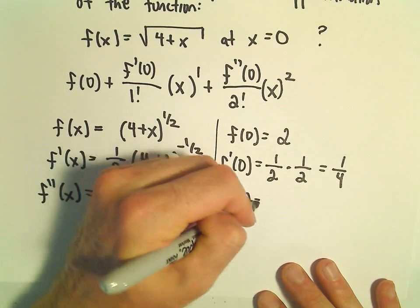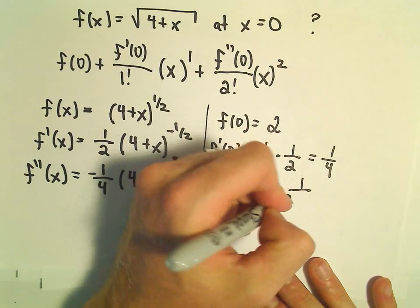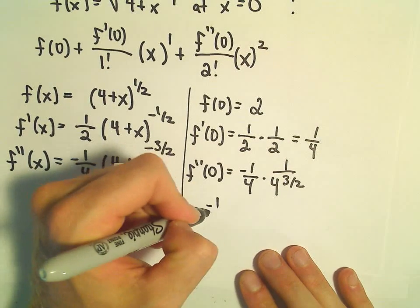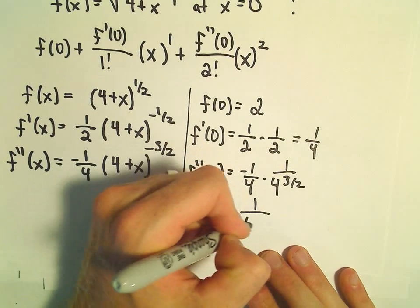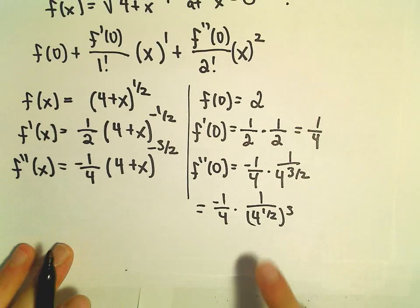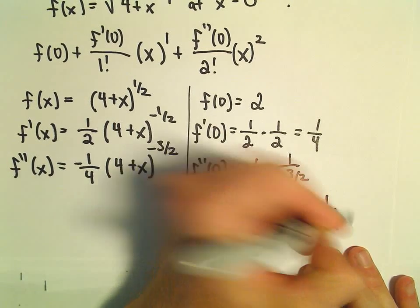Then f double prime of 0, that's going to be negative 1 fourth. We would have 1 over 4 to the positive 3 halves power. But again, we can just write that as 4 to the 1 half cubed. So 4 to the 1 half is 2, cubed is 8. So this will give us negative 1 over 32.